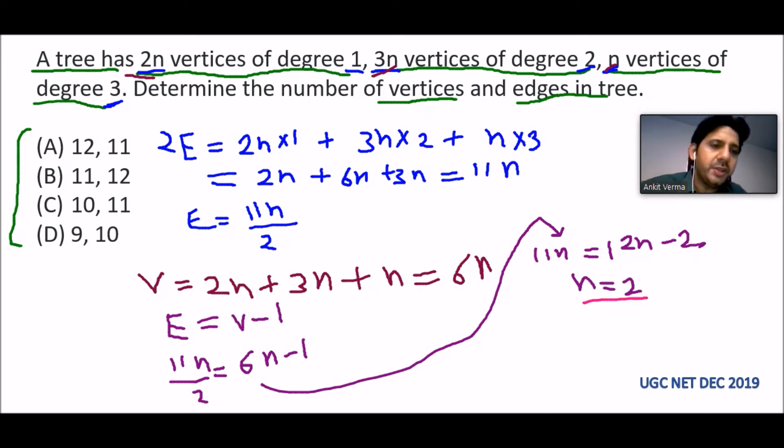Now we put the value of n into the equation. E equals 11 into 2 by 2, which equals 11. So edges will be 11, and there are 2 options for 11. Then we put n into the other equation: 6 into 2 equals 12. So vertices equal 12. There is one option matching, which is option A. So option A is the correct option.